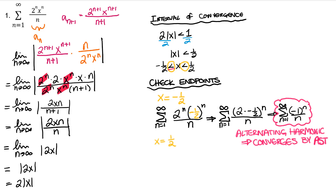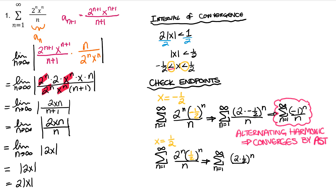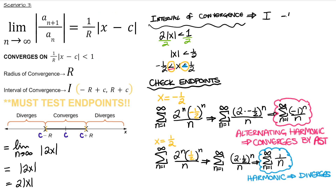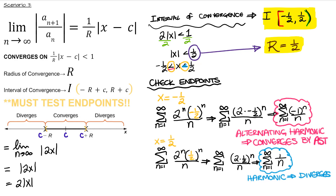Let's check x = 1/2. This series is the harmonic series, and that diverges. So when x equals positive 1/2, we get a divergent series, meaning 1/2 is not inclusive. This makes our interval of convergence [−1/2, 1/2). Our radius of convergence is right here — really just half the interval of convergence. And there's our answer.